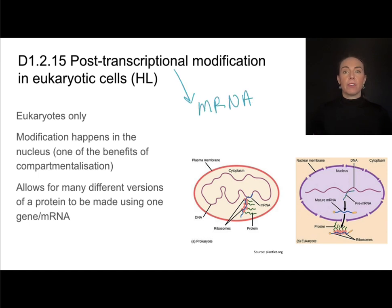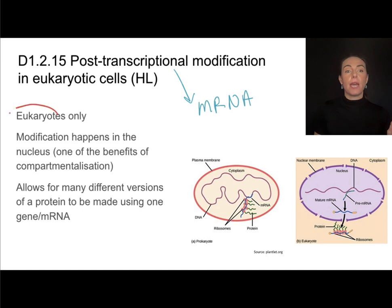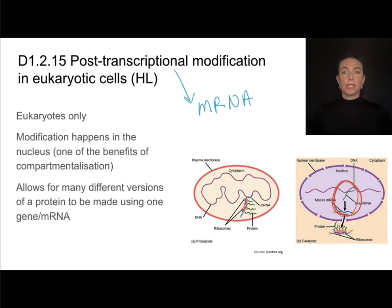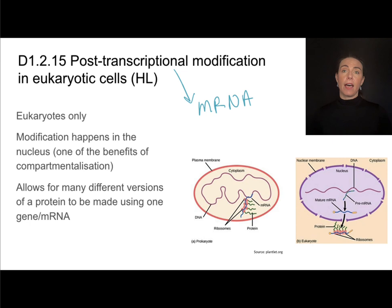Transcription is going to produce mRNA. In post-transcriptional modification, we will modify that mRNA. This can only happen in eukaryotes, because eukaryotes are compartmentalized. That means there is a nucleus separating the area where transcription is happening from the area where translation is happening out in the cytoplasm on the ribosomes. Why do we care? Because editing that mRNA allows us to make lots of different versions of a protein using the same gene.